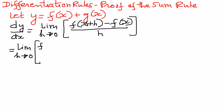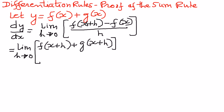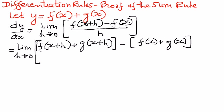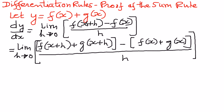f of x plus h plus g of x plus h — we put that in brackets — and then minus, open brackets, f of x plus g of x, close brackets. This whole thing divided by h, and then we close brackets on the right-hand side.